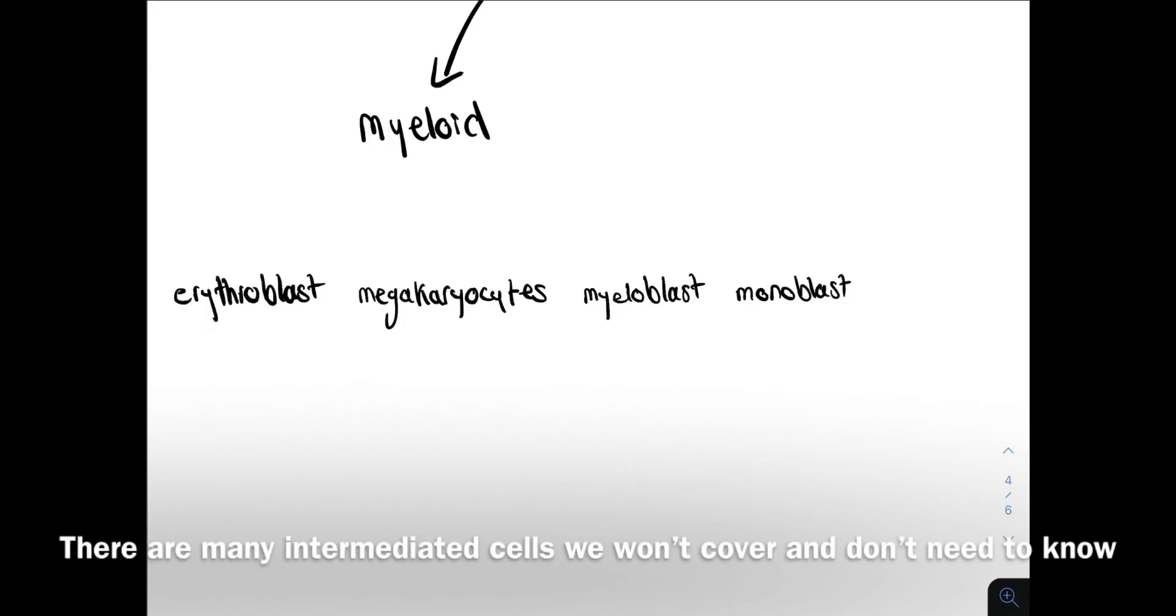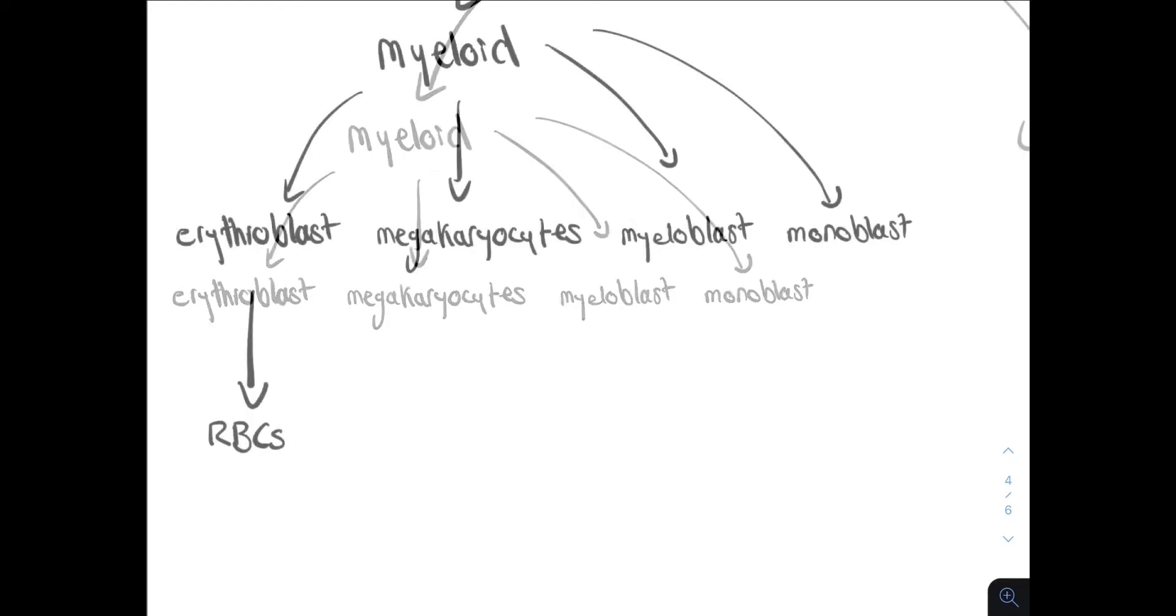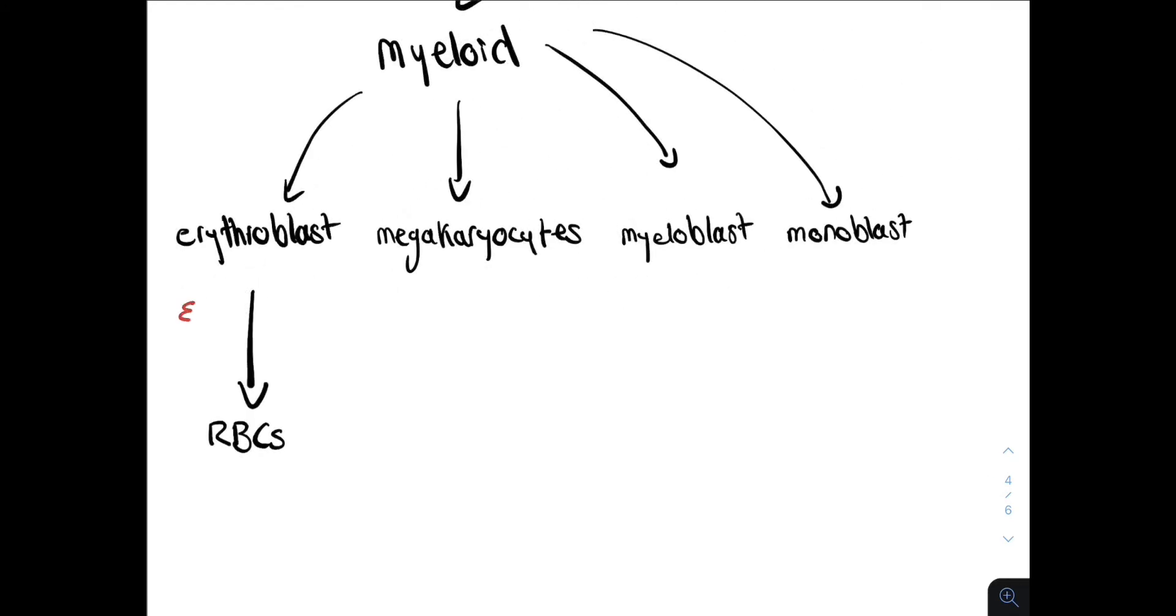These are the erythroblasts, megakaryocytes, myeloblasts and monoblasts. Erythroblasts differentiate into red blood cells or erythrocytes. This is under the influence of erythropoietin or EPO. Megakaryocytes produce platelets. This is under the influence of thrombopoietin.